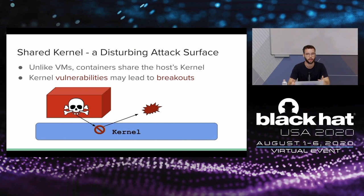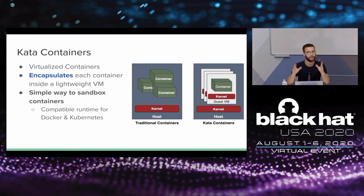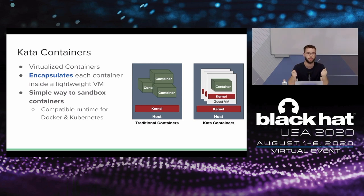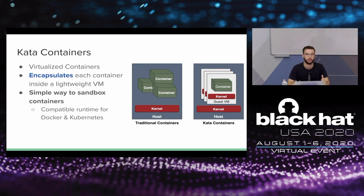The issue here is that vulnerabilities don't really have to be related to namespaces or cgroups or any of the primitives that make up containers. Any privilege escalation vulnerability in the kernel, in a code path the container can invoke, could allow a container to break out — and that's quite concerning. To tackle that issue, a few tools arrived that allow you to sandbox containers. Kata containers is one of the first solutions to do that, taking a straightforward approach: it runs each container inside a dedicated, lightweight virtual machine. By doing that, you get two layers of isolation — first the container, then the virtual machine — and you also mitigate kernel vulnerability-based breakouts, because even if the container exploits a vulnerability in the guest kernel, it's only compromising the guest.